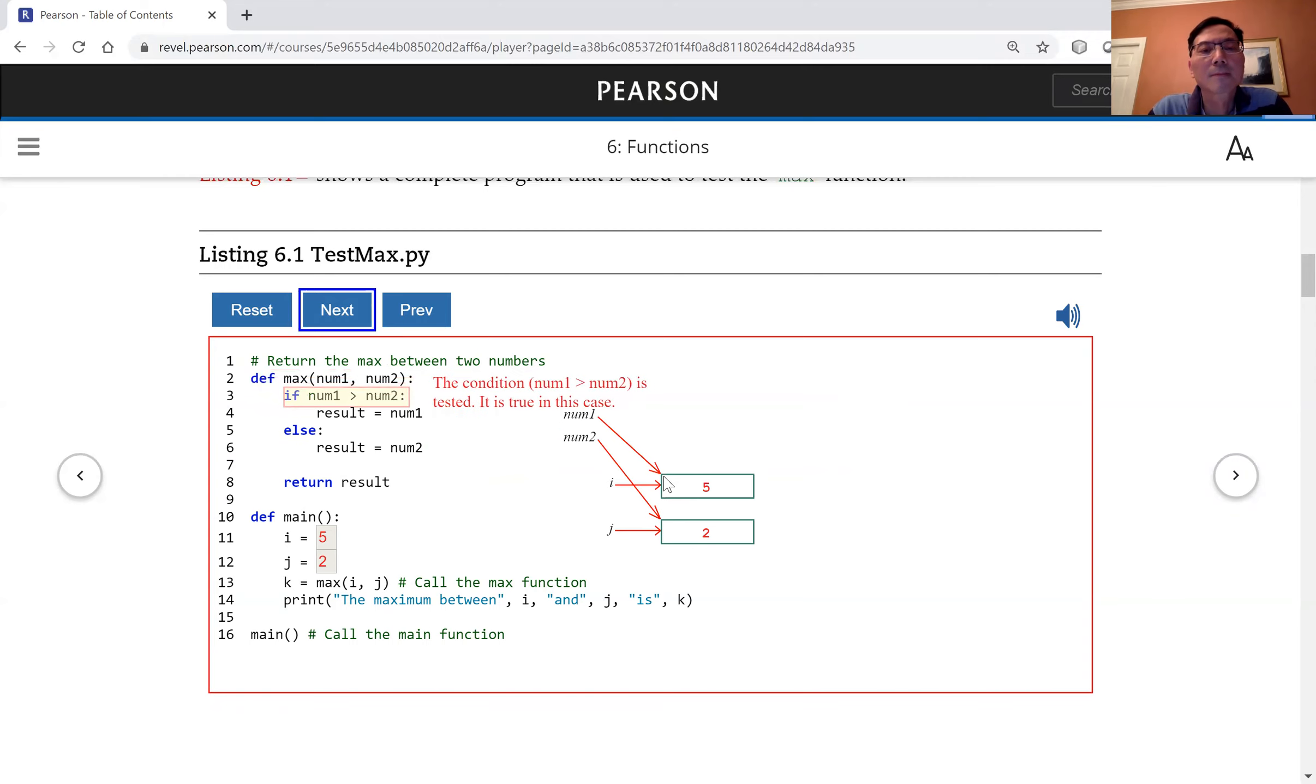The condition num1 is greater than num2 is tested. It is true in this case. Num1 is assigned to result. The result is returned from the max function. The max function is finished. The return value is assigned to variable k.